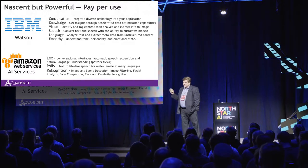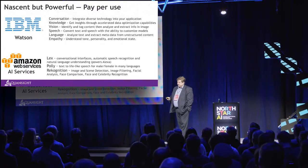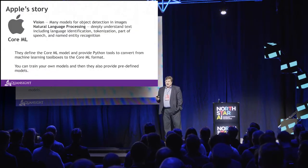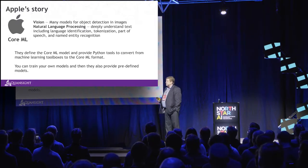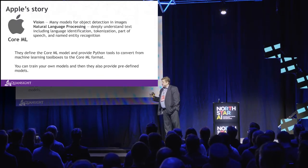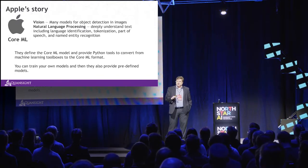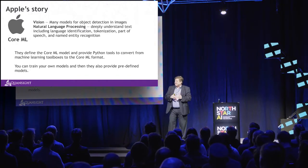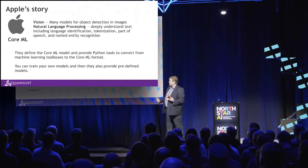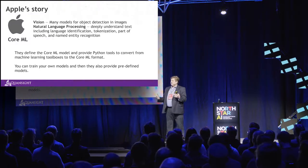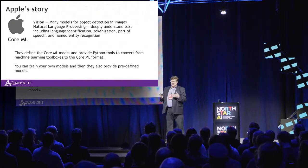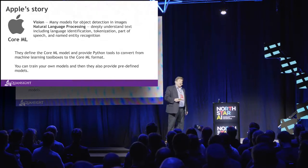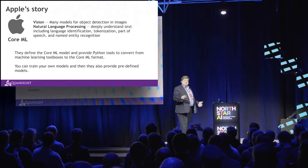Amazon has Lex, Polly, and Rekognition. Apple has been focusing on how to take machine learning models and apply them on your phone — the edge computing problem. They've come up with a Core ML concept. I'm curious about Core ML and ONNX to see if there's some connection there. But all of them are using Python, which is really exciting.